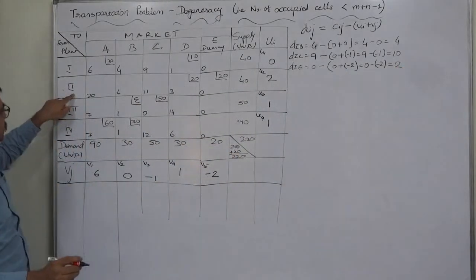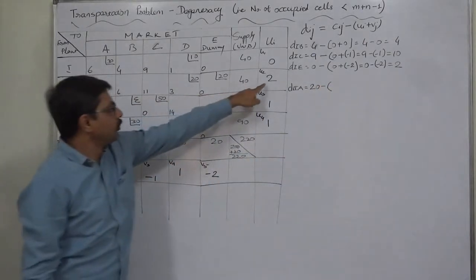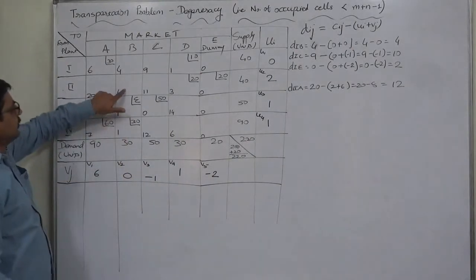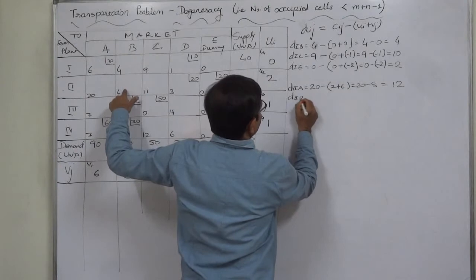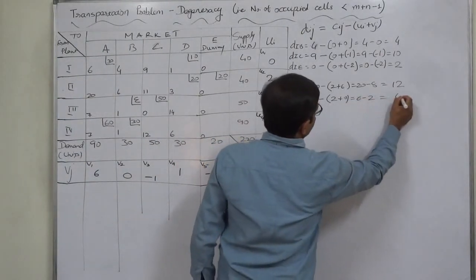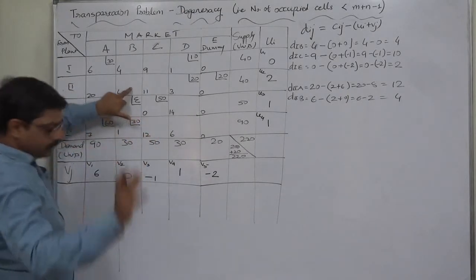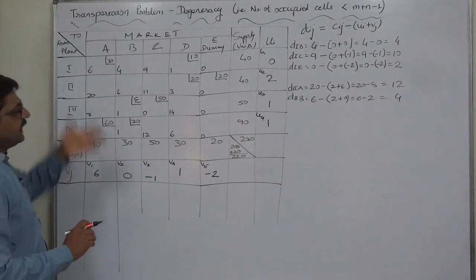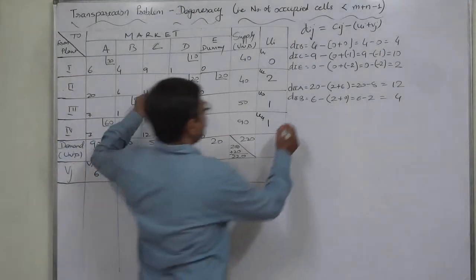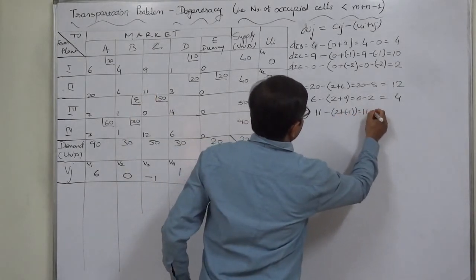Now for row 2. D2A: C is 20, minus (U2=2 plus V1=6) = 20 minus 8 = 12. D2B: C is 6, minus (U2=2 plus V2=0) = 6 minus 2 = positive 4. As long as we get positive DIJ values we need to move forward to check whether there are any negative DIJ values. If there is no negative DIJ value, the solution can be treated as optimal. D2C: 11 minus (U2=2 plus V3=minus 1) = 11 minus 1 = 10.